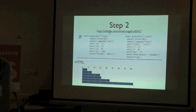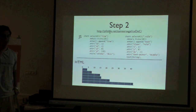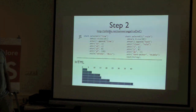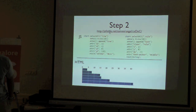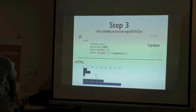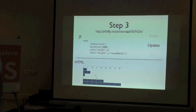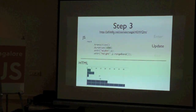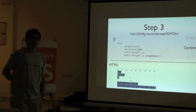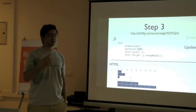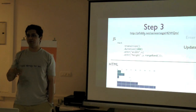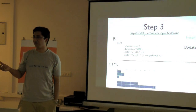Now we've got a simple graph — it's a static graph. We're using about 20-25 lines of code. The next interesting thing is when you want to update these graphs. The good part about using D3 is that it will automatically sense if your array has changed and what it needs to do.